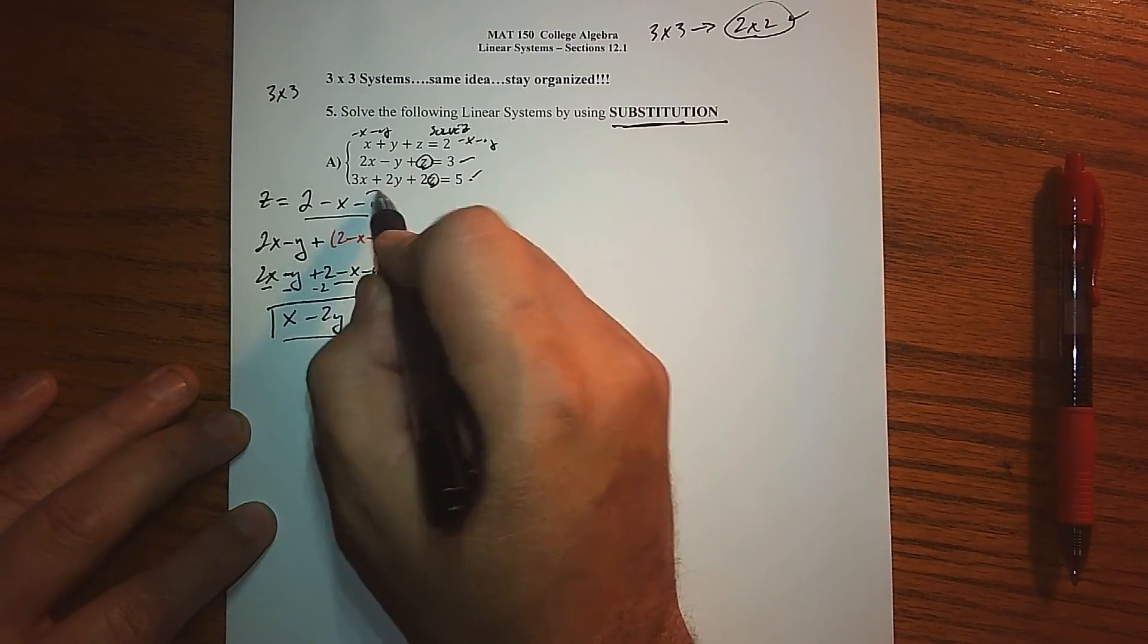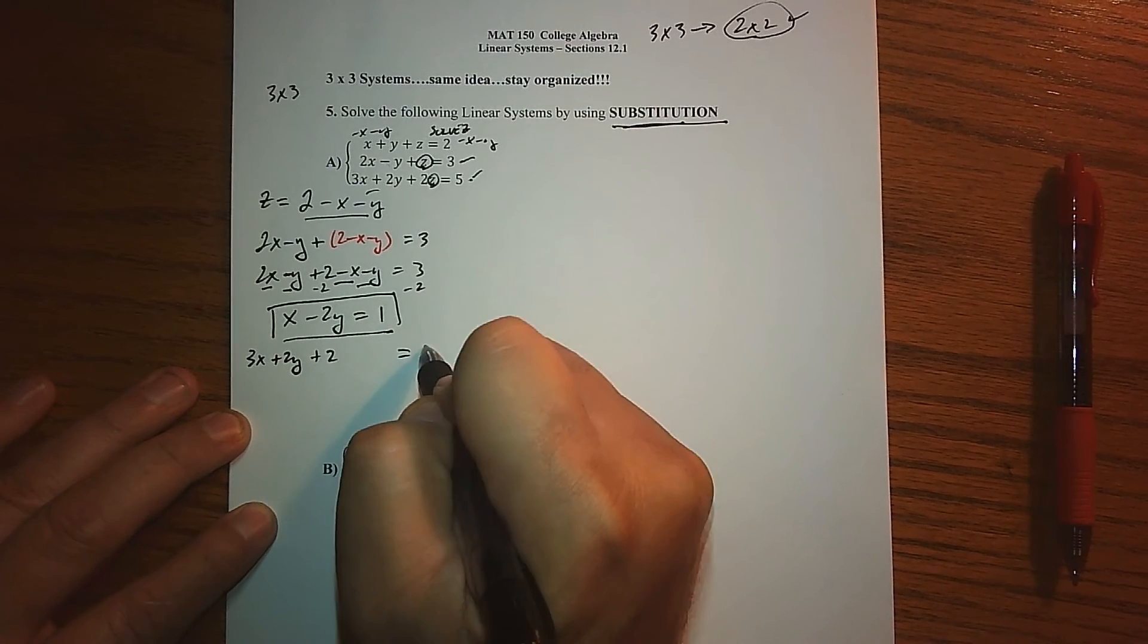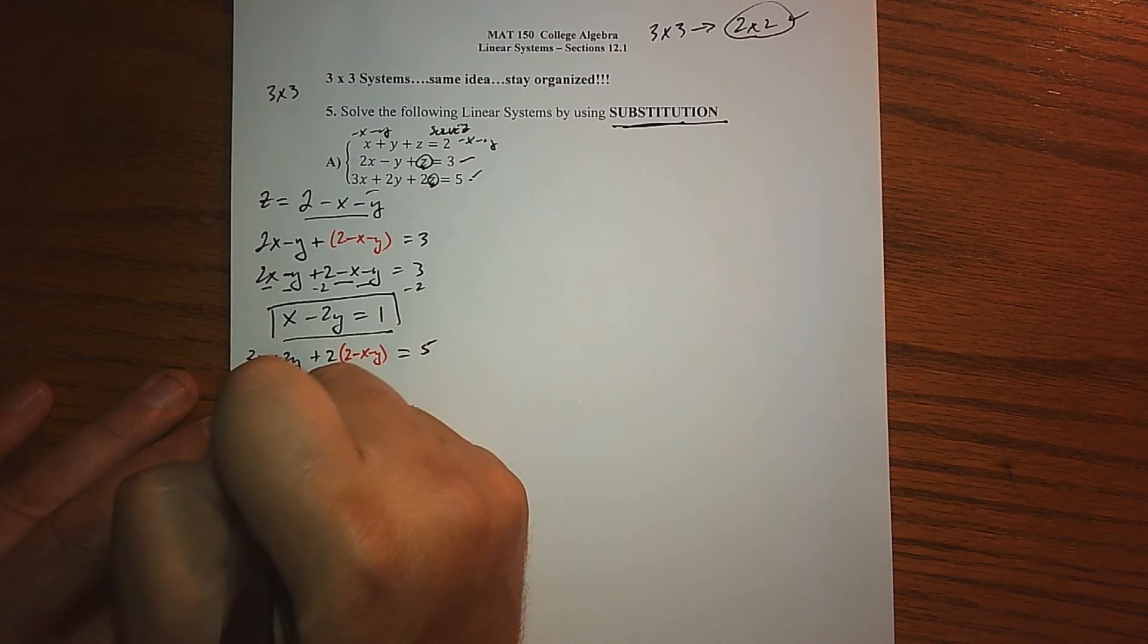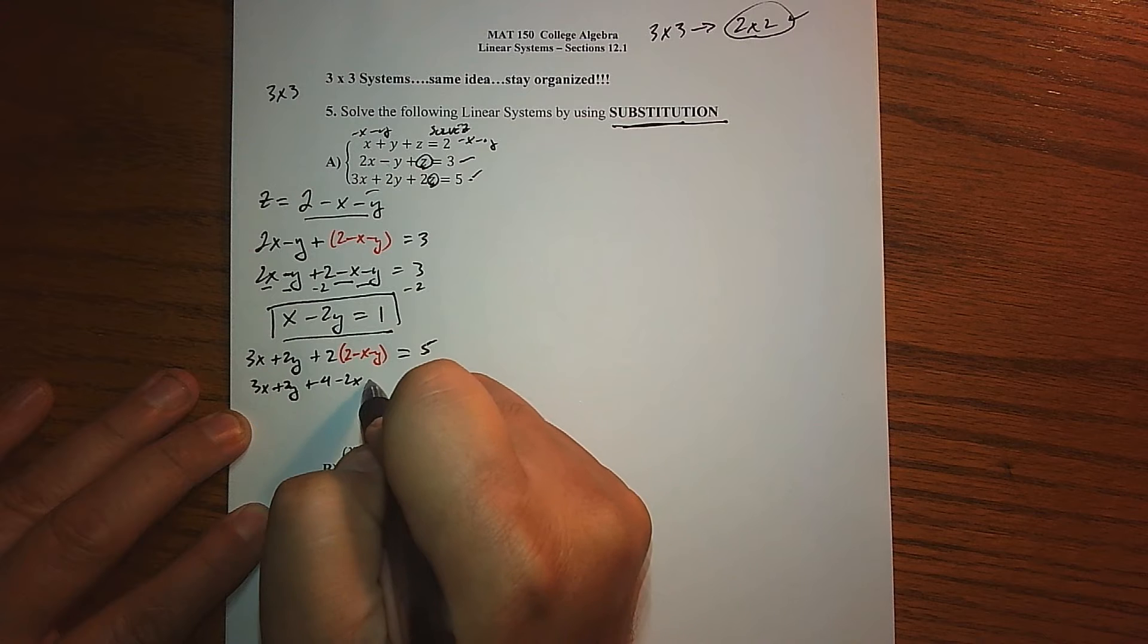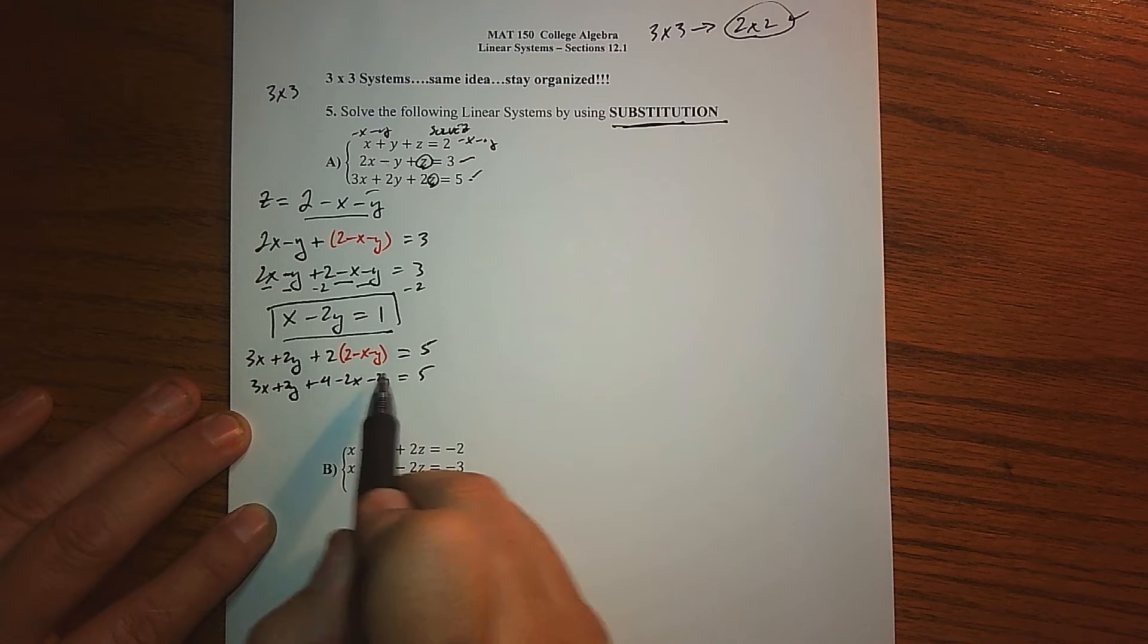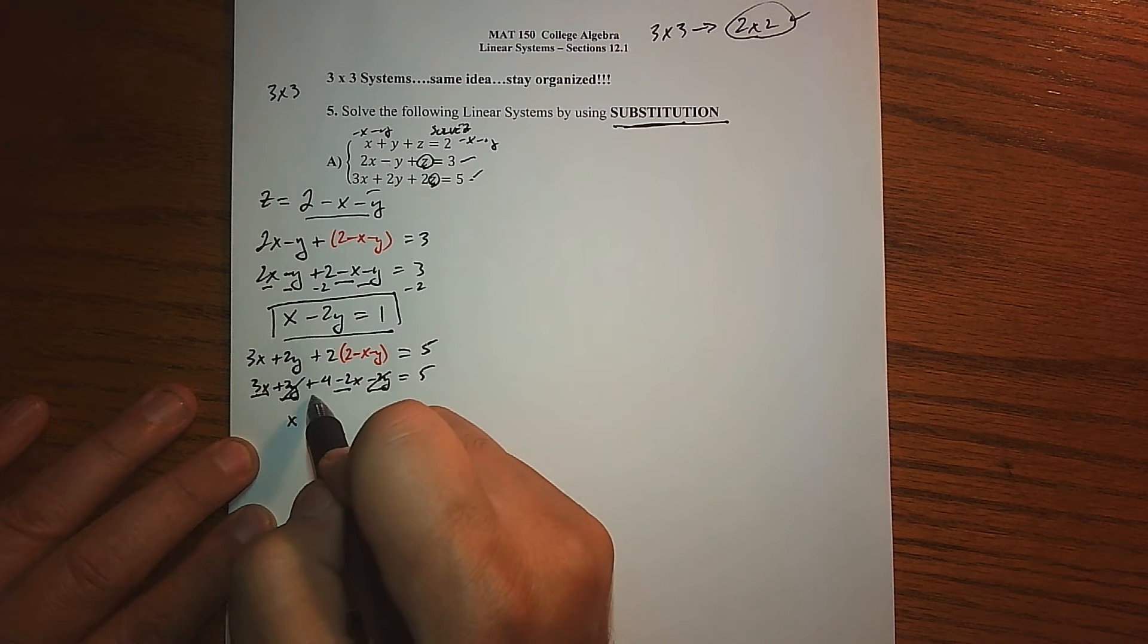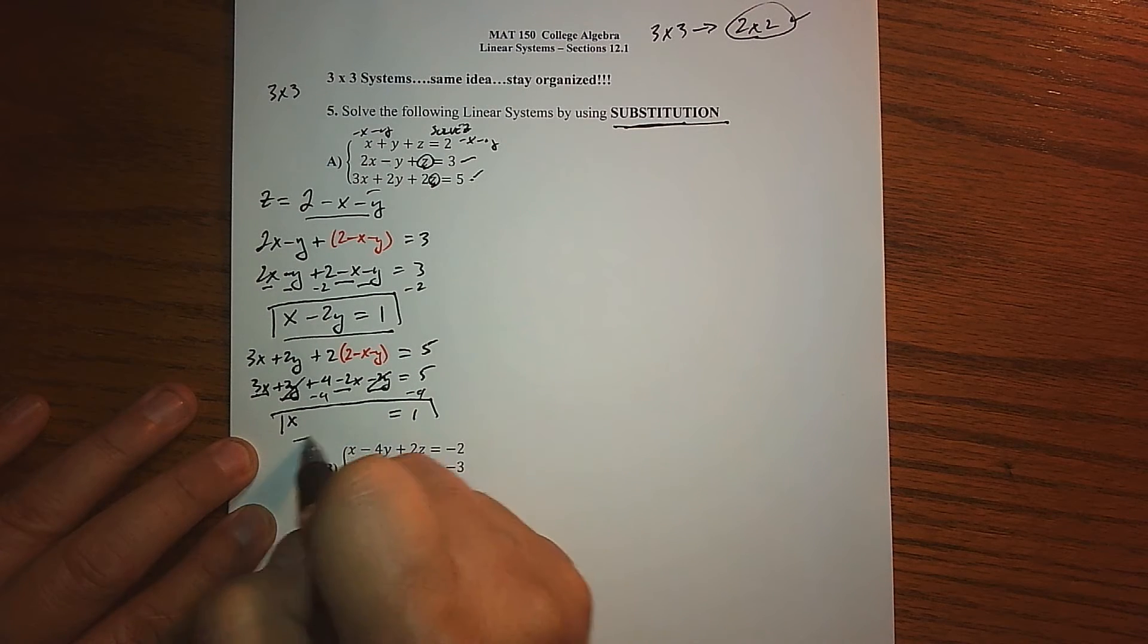Same thing here, we got 3X plus 2Y plus 2, and I'm going to replace that 2 with what it's equal to: 2 minus X minus Y. So cleaning this up, we get 3X plus 2Y plus 4 minus 2X minus 2Y equals 5. Combining like terms, that gives us an X here that actually goes away.